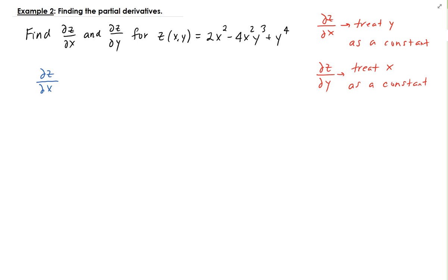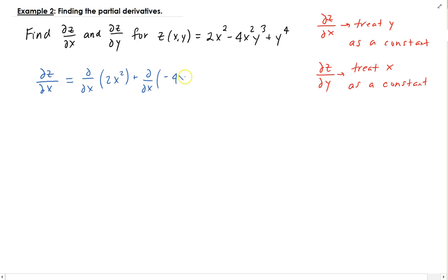So let's proceed. Finding the partial of Z with respect to X — we can split this up. We take the partial of 4X squared Y cubed, plus the partial of Y to the fourth with respect to X. We can take the partial of each term separately.